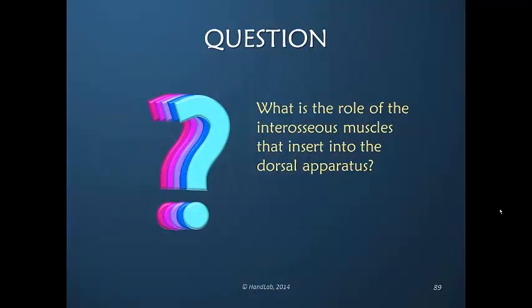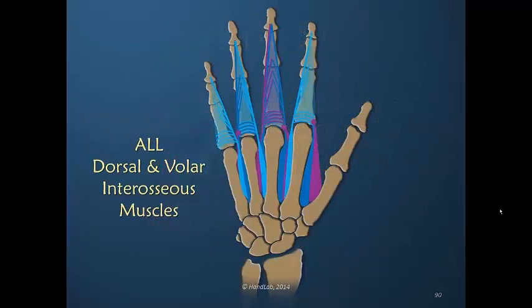Since they insert into the dorsal apparatus, their functions follow accordingly. In this schematic drawing, we've added all of the dorsal and volar interosseous muscles — two bellies for each dorsal and only one belly for each volar — with color coding. The red or pink color represents the volar belly of the dorsal interosseous muscles.